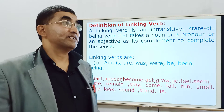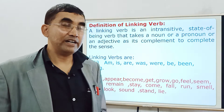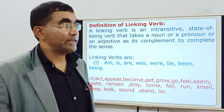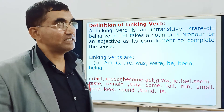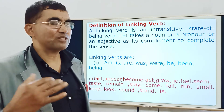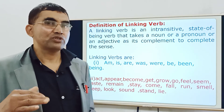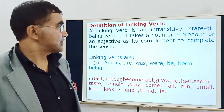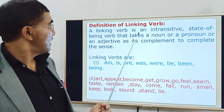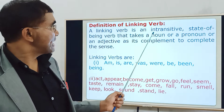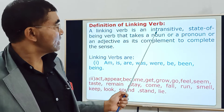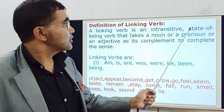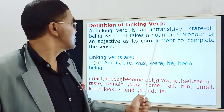But if I say 'the tree is high,' 'the man is weak,' 'he got tired' — 'is' and 'got' are totally state of being verbs. So there are two main characteristics of a linking verb: it is an intransitive verb and it is a state of being verb.